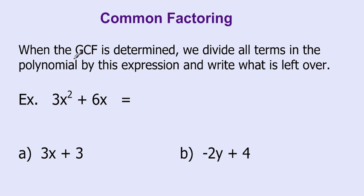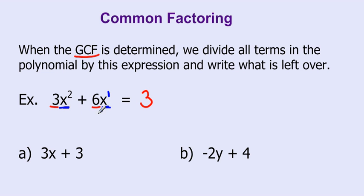Let's put this all together. Once you have the greatest common factor, you can divide all terms in the polynomial by this expression and write what is left over. For example, 3x squared plus 6x — what is the greatest common factor? Looking at the numbers: I have a 3 and a 6; 3 goes into both. Looking at the x's: I have x squared, which is x times x, and x to the power of 1. So the greatest common factor I can take out is 3x.